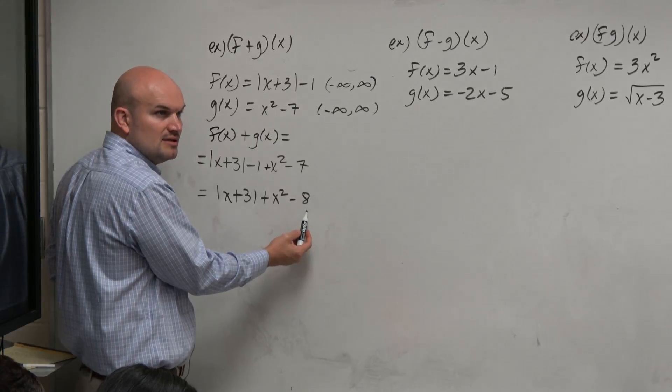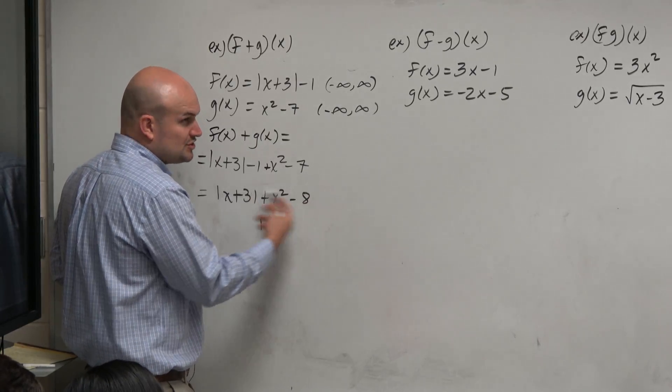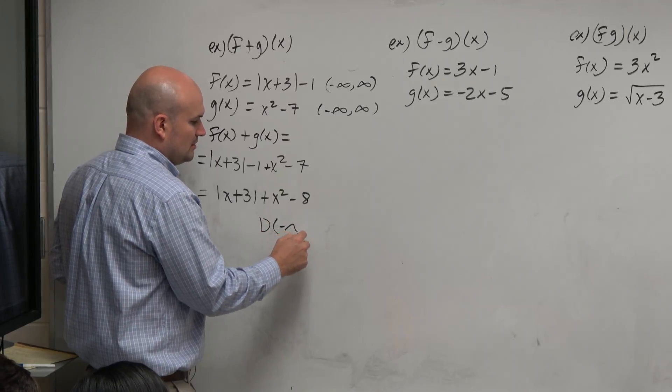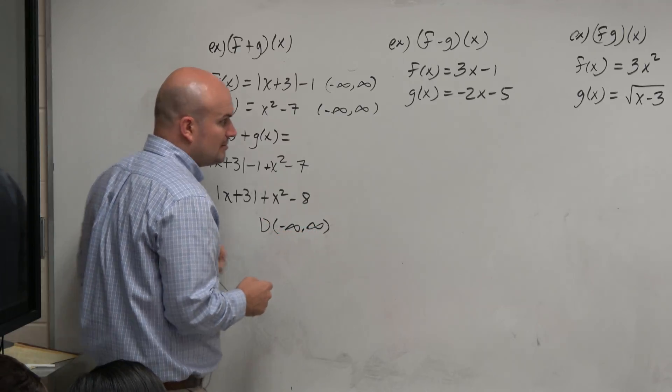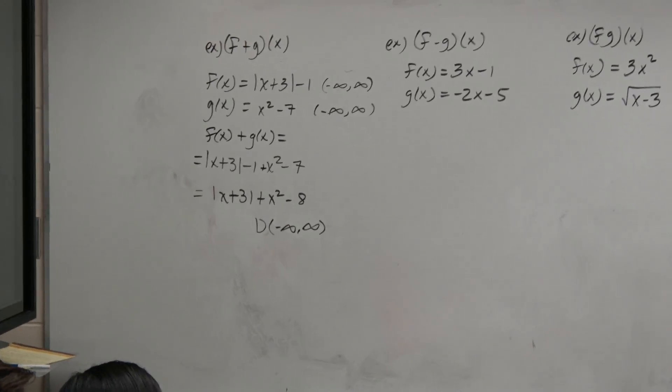It's going to be all real numbers, right? Does that make a logical argument for us to make? There's no restrictions we're adding. So the domain is going to be all real numbers. And again, you could verify that by graphing. But once we kind of finish this, you'll see.